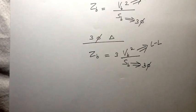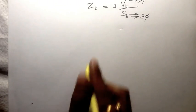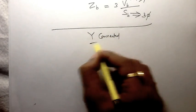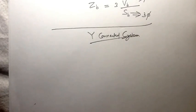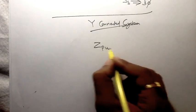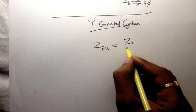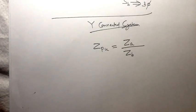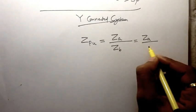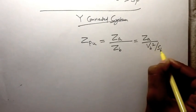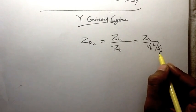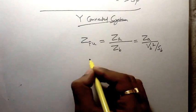Now let us take the star-connected system. In the case of the star-connected system, the per-unit impedance equals the actual value of the impedance divided by the base value of impedance. For the star-connected system, Z_base equals V_base squared divided by S_base, where V_base is the line-to-line voltage and S_base is the three-phase power.